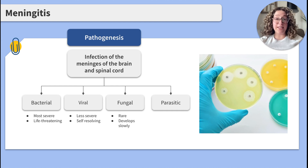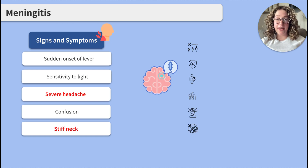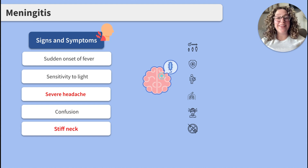Now that we know what meningitis is and how clients get it, let's look at how these clients may present. The symptoms of meningitis can vary depending on the cause, but typically include the sudden onset of a fever, sensitivity to light, a severe headache, confusion, and a stiff neck. The hallmark signs of meningitis are a severe headache with neck stiffness — if you see those two together, think meningitis.